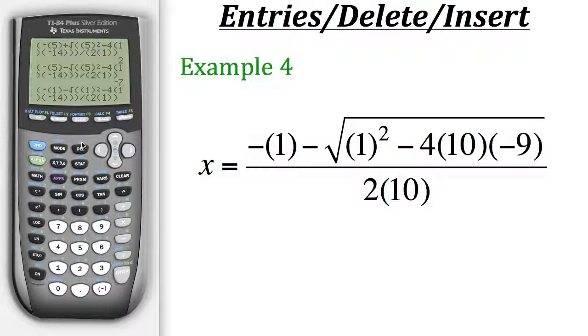Which is labeled INS in blue above the delete button. So we could hit second, delete, and now type in zero. Now you'll notice that the calculator put a zero there and then push the rest of our entry over to the right. So now we have a 10 in the spot that we need it.